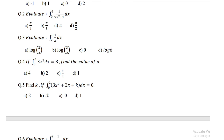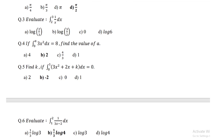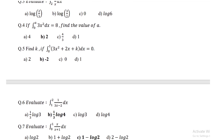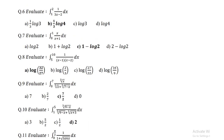Question number 4: if integration of 0 to a of 3x squared dx is equal to 8, then find the value of a. The value of a is 2. Question number 5: find k if integration of 0 to 1 of (3x squared plus 2x plus k) dx is equal to 0. k is equal to minus 2.